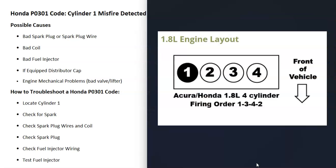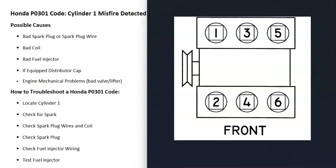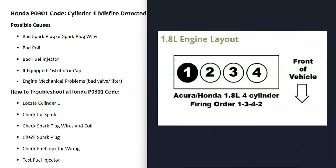How do you troubleshoot a Honda with the P0301 code? The first thing to do is locate cylinder number one on your particular engine, since that's the one having the issue. If you Google your vehicle, year, and engine and look at the images, you'll usually be able to find the firing order and the cylinder location on your particular Honda.